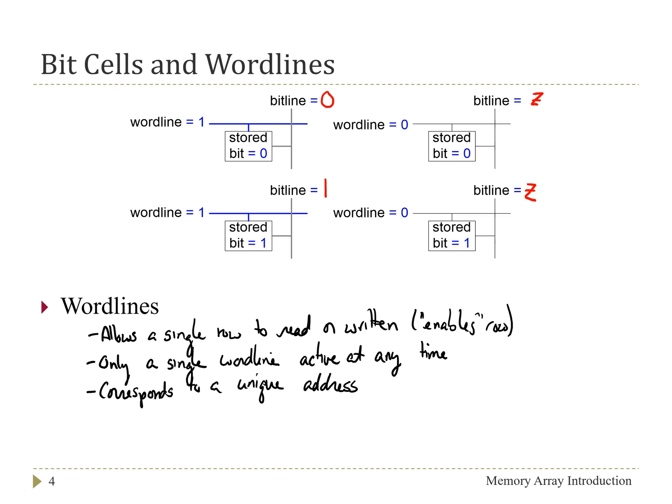And so this provides a general introduction to the basics of memory arrays. And then the specifics of different types of memory depend really on the nature of how the information is stored in the bit cell.